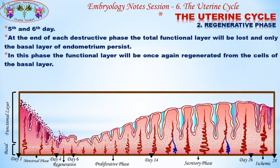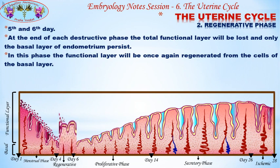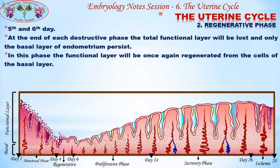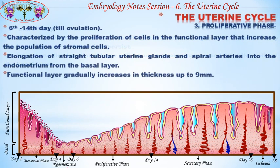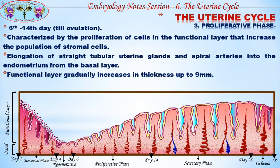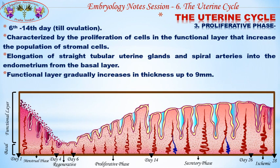The second is the regenerative phase, occurring on the fifth and sixth day. At the end of each destructive phase, the entire functional layer is lost and only the basal layer of the endometrium persists. In this phase, the functional layer is once again regenerated from the cells of the basal layer.